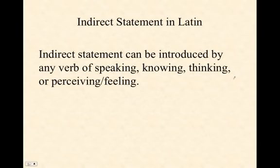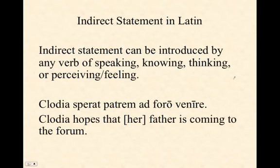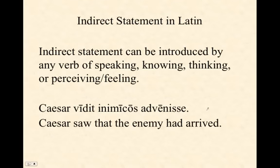An indirect statement can be introduced by any verb of speaking, knowing, thinking, or perceiving. For example: Claudia sperat patrem ad foro venire — Claudia hopes that her father is coming to the forum. Introduced by 'hopes,' everything after is the indirect statement: accusative subject, infinitive verb. Caesar vidit inimicos advenisse — Caesar saw that the enemy had arrived — introduced by a verb of perceiving, followed by an accusative subject and infinitive verb.